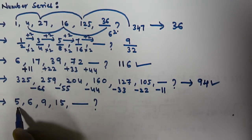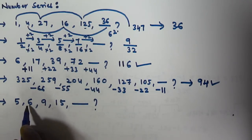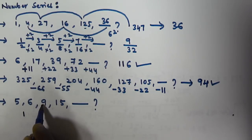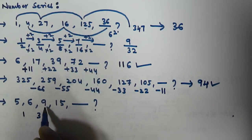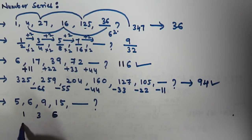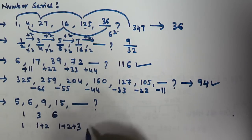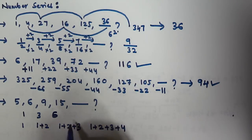For the last series: 5, 6, 9, 15. The difference between 5 and 6 is 1, between 6 and 9 is 3, and between 9 and 15 is 6. These differences can be written as 1, then 1 plus 2 equals 3, then 1 plus 2 plus 3 equals 6. So the next difference is 1 plus 2 plus 3 plus 4, which equals 10.